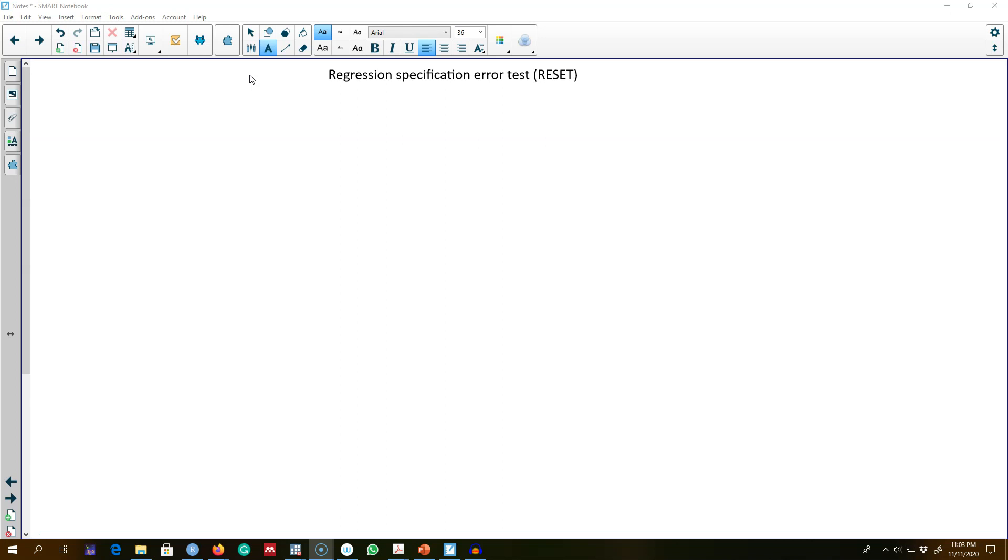The test is called RESET, or Regression Specification Error Test. The logic behind using this test is as follows: suppose our model looks something like this, and we want to know whether we should be including higher order terms of these x variables on the right hand side.